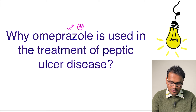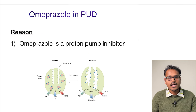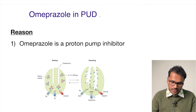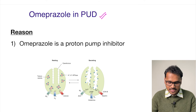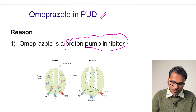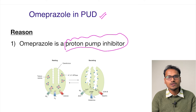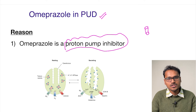Many of you might already know this. So what kind of drug is omeprazole? Omeprazole is used as a primary treatment in peptic ulcer disease, and the property that makes it useful is that it is a proton pump inhibitor. What is this proton pump?